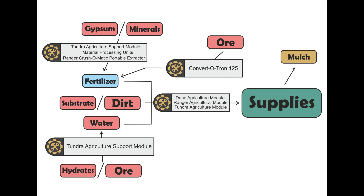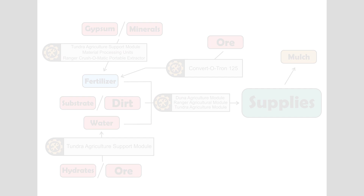The waste resource from this chain is obviously mulch, which your Kerbals produce by consuming supplies. And you can use it to produce even more supplies in the agroponics chain.